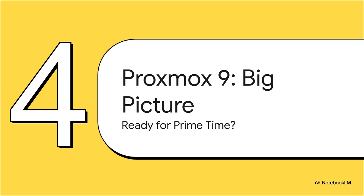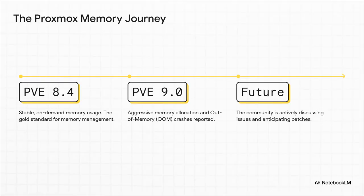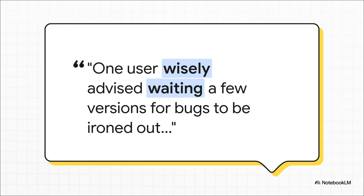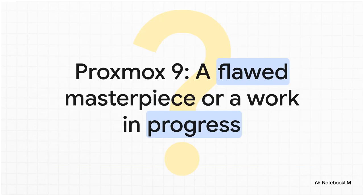With an issue this big, you have to ask: is Proxmox 9 really ready for primetime? Proxmox 8 was the gold standard — stable, reliable memory usage. Then Proxmox 9 came out and almost immediately, reports of aggressive memory allocation started pouring in. Right now, we're all in a holding pattern waiting for developers to release a patch. If you haven't upgraded yet, the most common advice is simple: just wait. Let the early adopters deal with these headaches. By version 9.1 or 9.2, the experience will probably be a whole lot smoother. Is Proxmox 9 a flawed masterpiece or just a work in progress? The new features are genuinely exciting, but this memory bug is a serious hurdle. With the strategies we've talked about today, at least you can navigate the storm while waiting for official fixes.